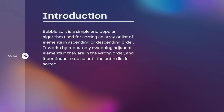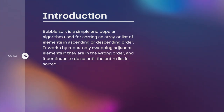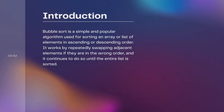Bubble sort is a simple and popular algorithm used for sorting an array or list of elements in ascending or descending order. It works by repeatedly swapping adjacent elements if they are in the wrong order, and it continues to do so until the entire list is sorted.